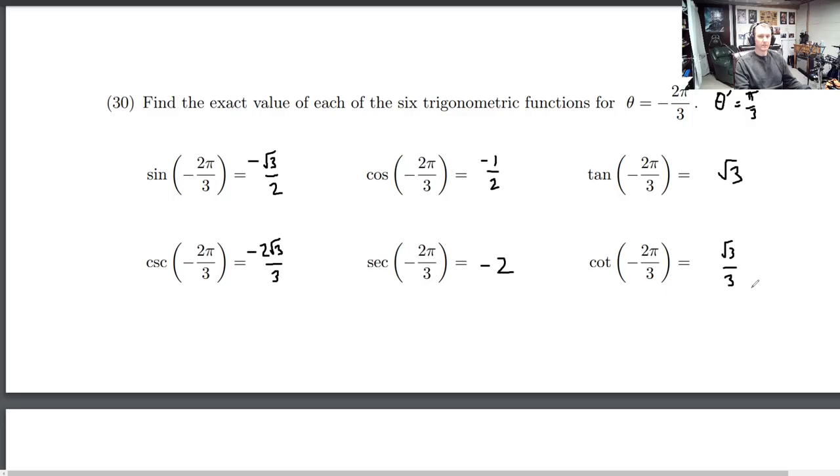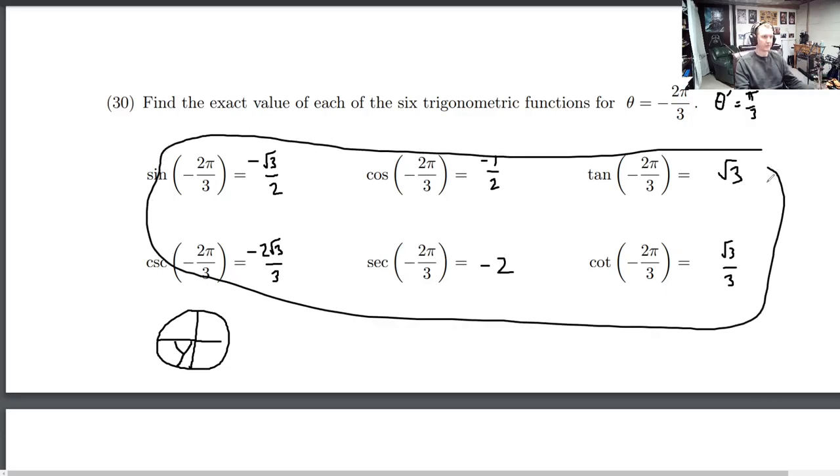Okay. So what work do I like to see? Well, it's the work of hey, where is this angle? What's the reference angle? And then everything's negative. Literally just saying those words: sine and cosine are negative, tangent's positive. And then all you need to write is something like this right after showing that. All right.